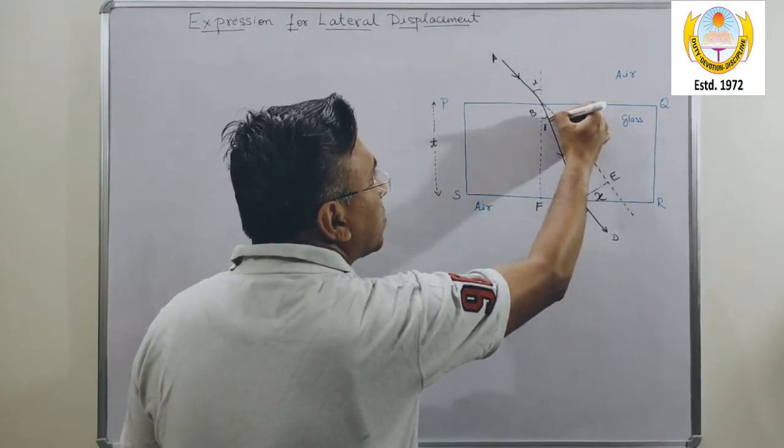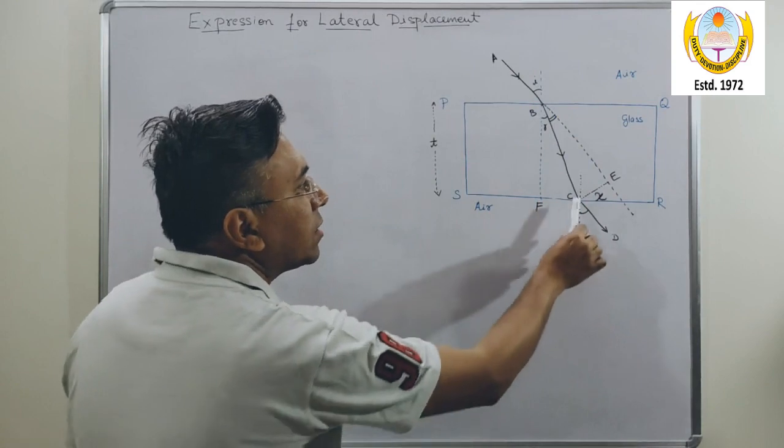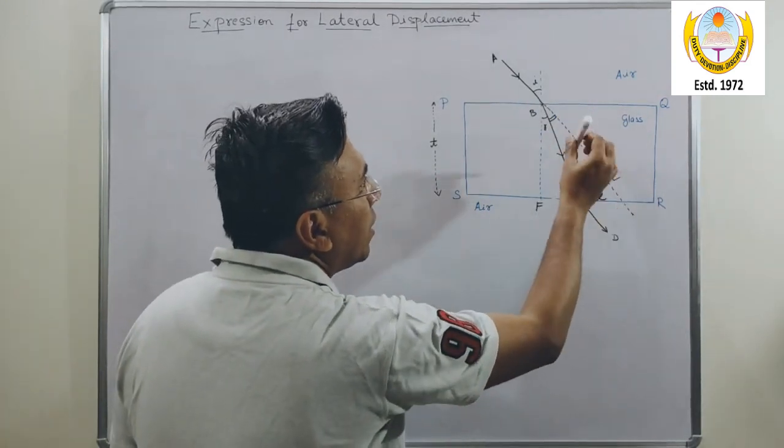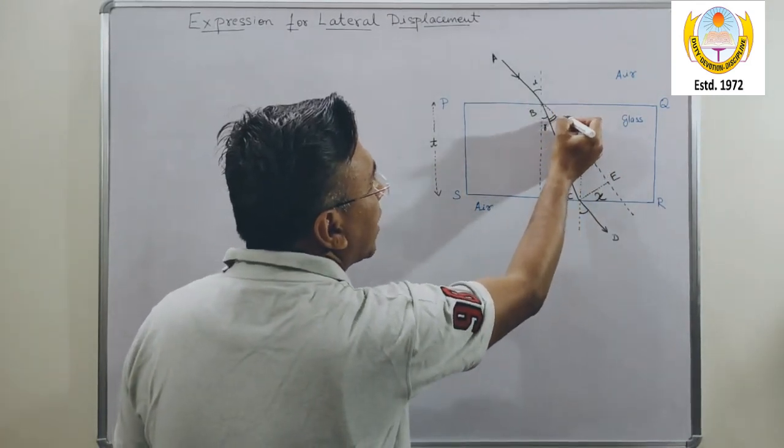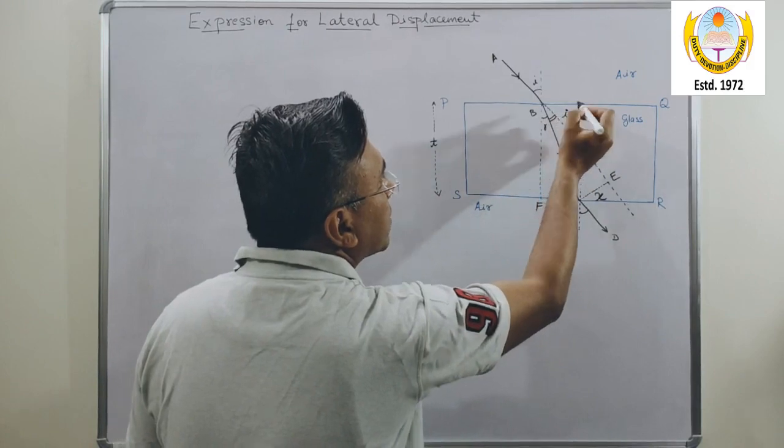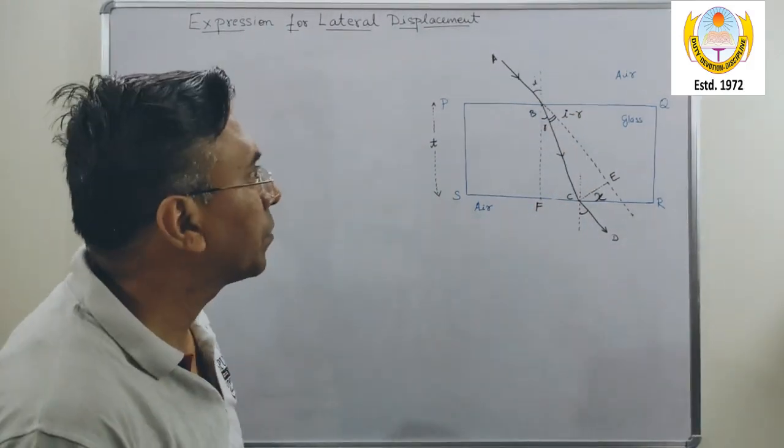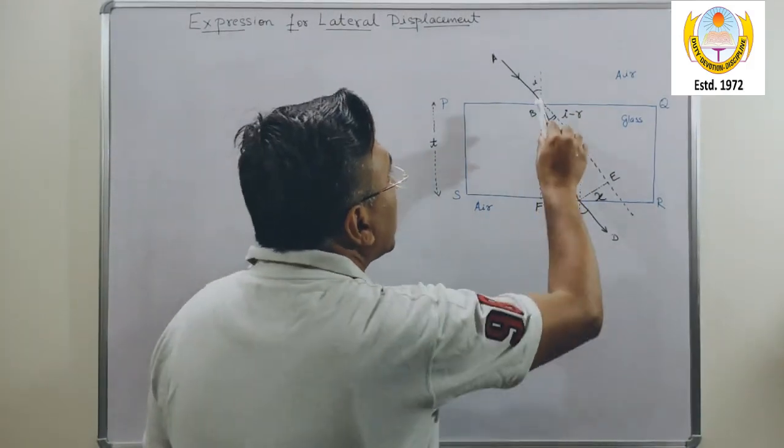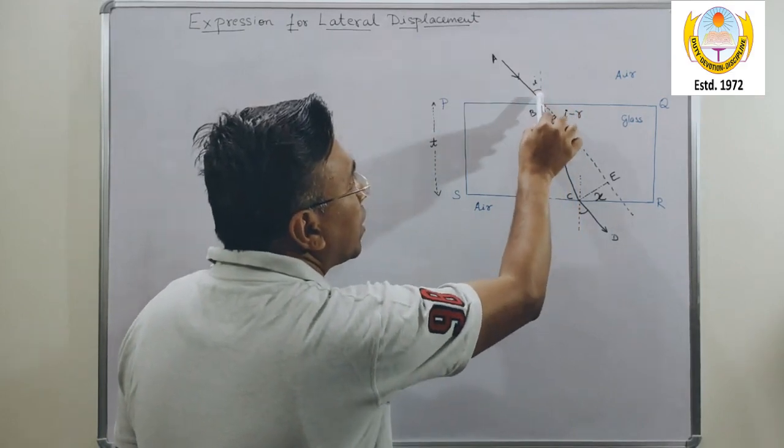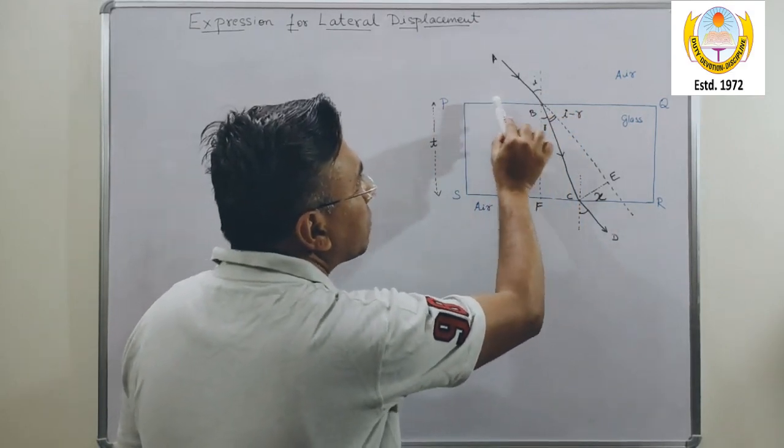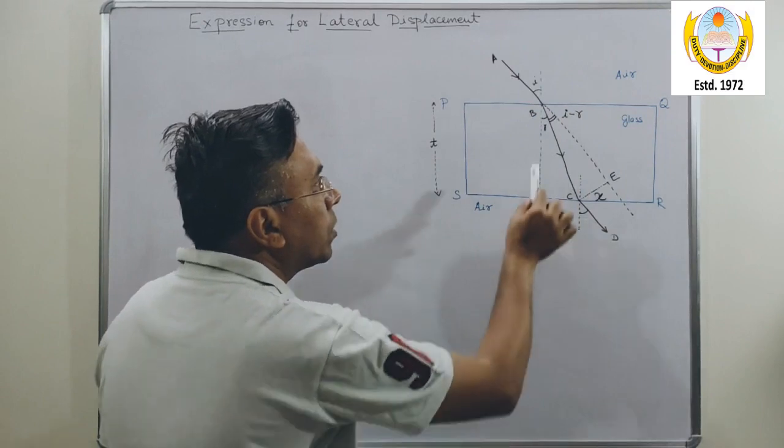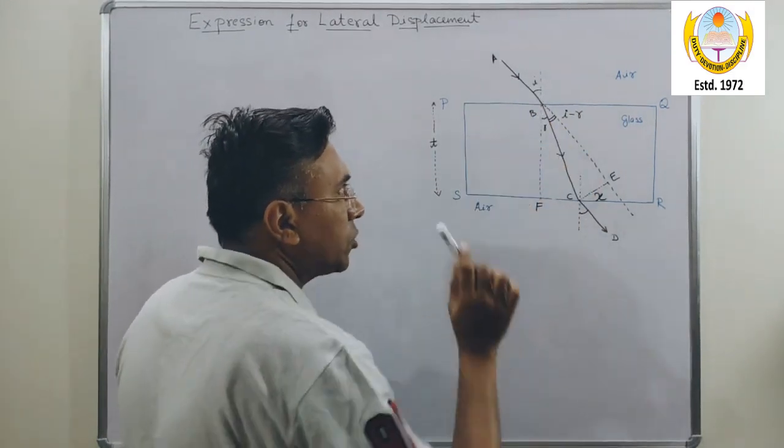So I can write this angle CBE as angle I minus R. I repeat again, angle I is the angle of incidence for the surface PQ, R is the angle of refraction.